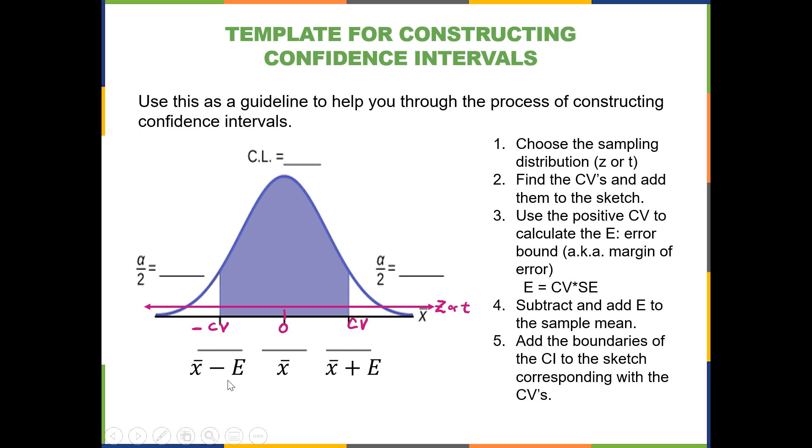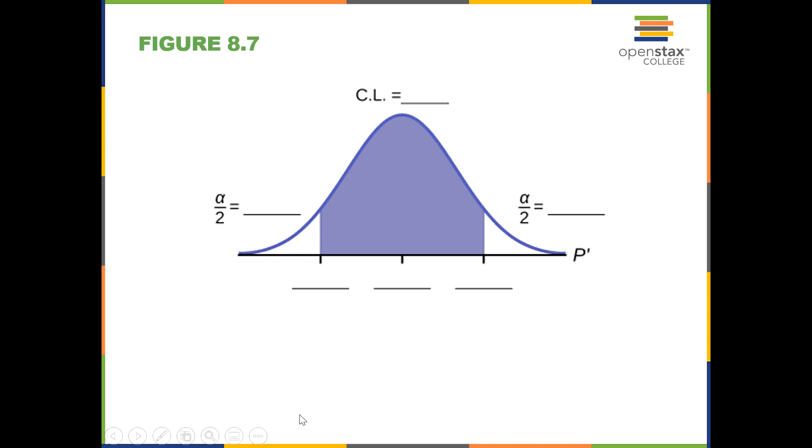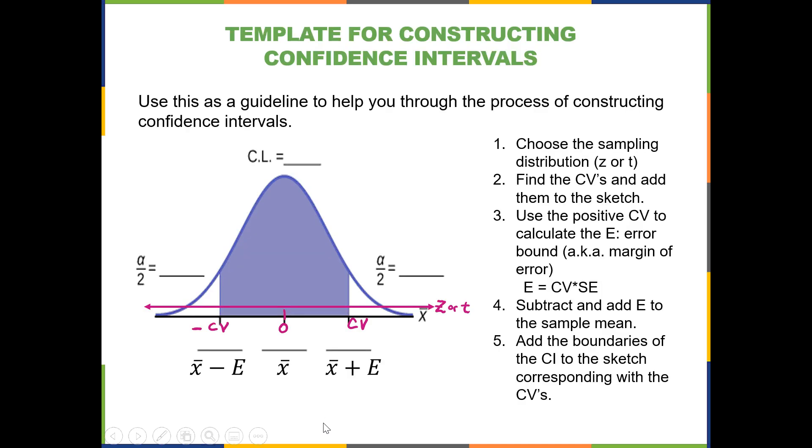So this would be your lower boundary, this would be your upper boundary, and you have the point estimate in the center here. So that concludes the general overview of how to construct a confidence interval and we'll see examples in future videos.